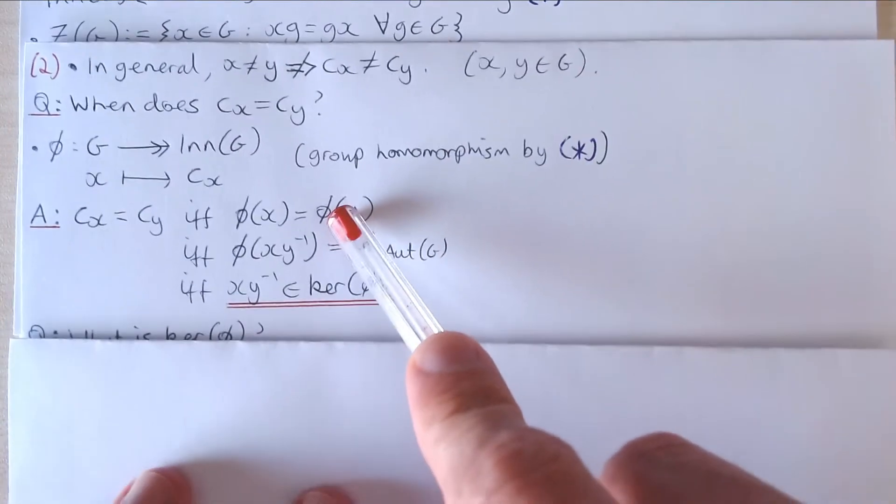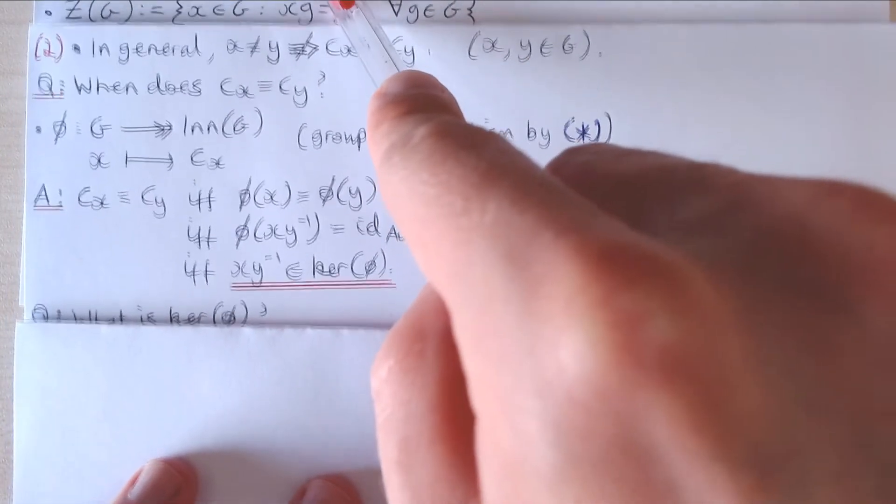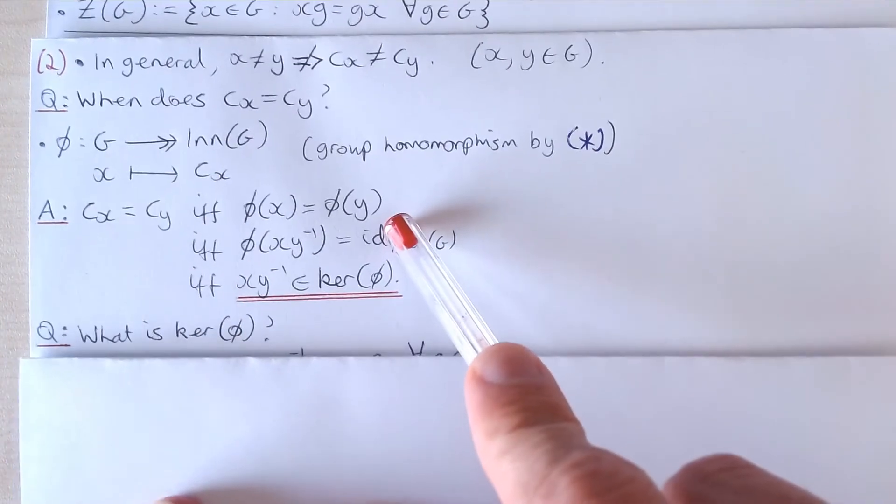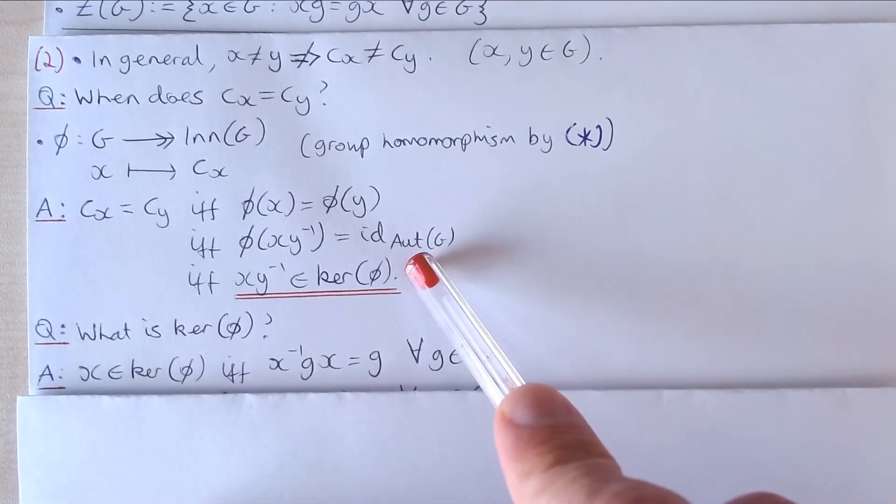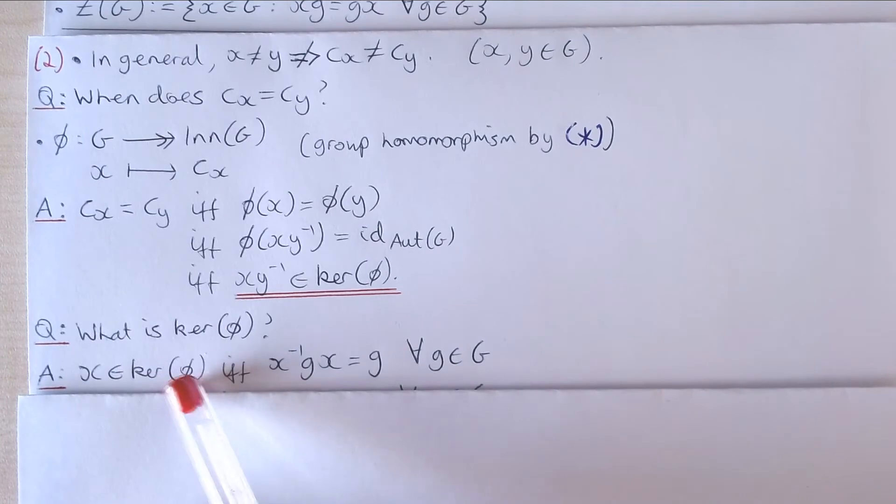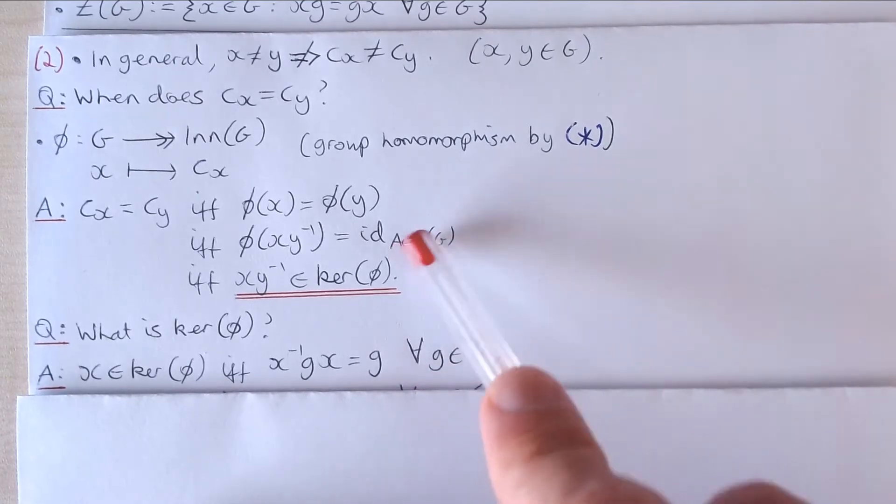Now the question is what is this kernel of phi? Well, for an answer, if x is in the kernel of phi, then that holds if and only if x inverse gx equals g for all elements g in our group G.